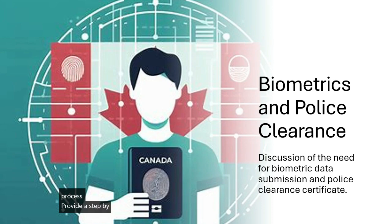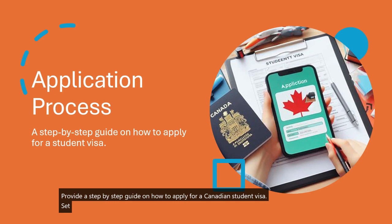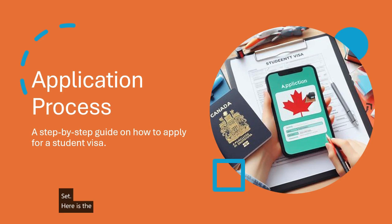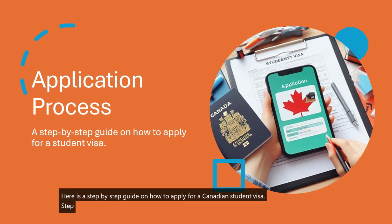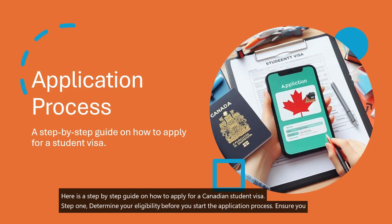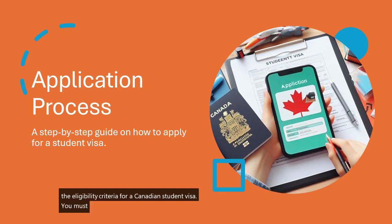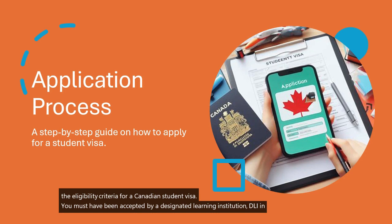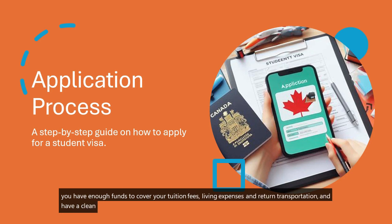Step-by-step guide on how to apply for a Canadian student visa. Step 1 — Determine Your Eligibility: before you start the application process, ensure you meet the eligibility criteria for a Canadian student visa. You must have been accepted by a Designated Learning Institution (DLI) in Canada, prove that you have enough funds to cover your tuition fees, living expenses, and return transportation, and have a clean criminal record.